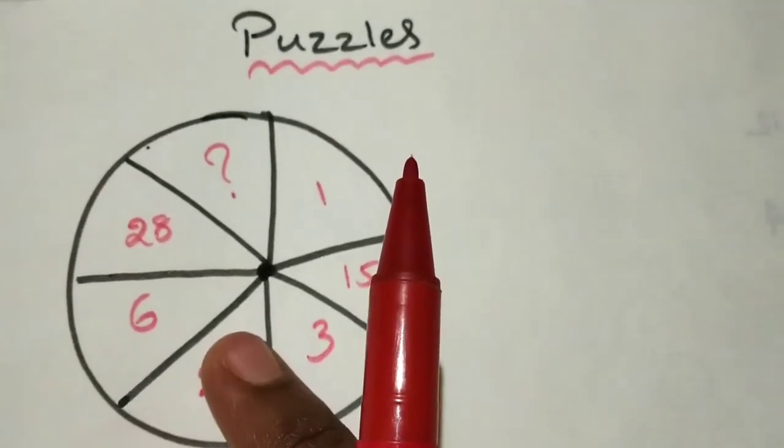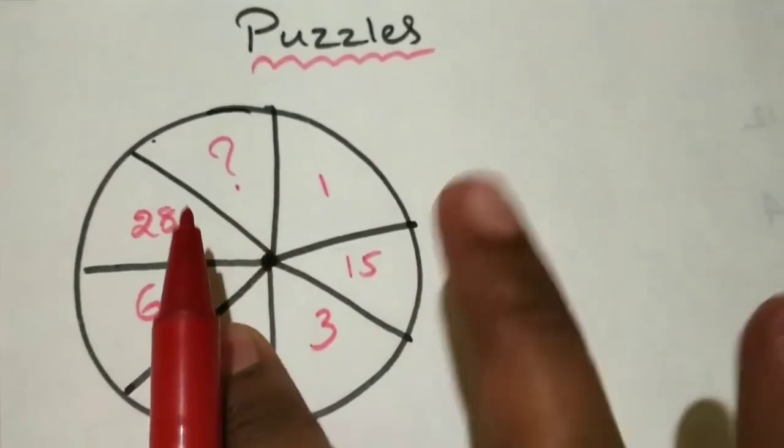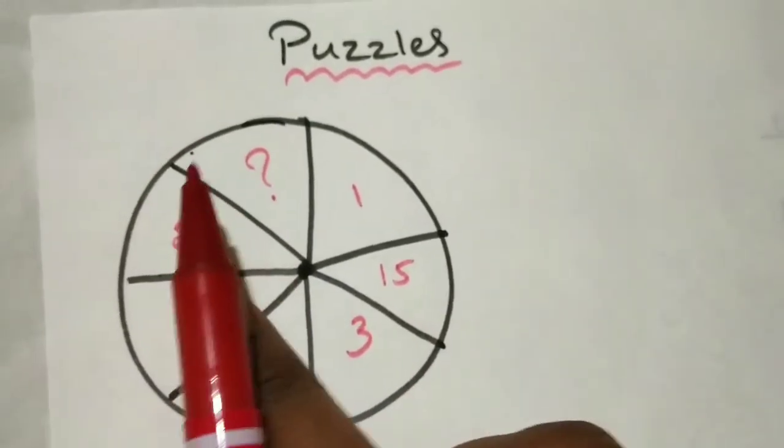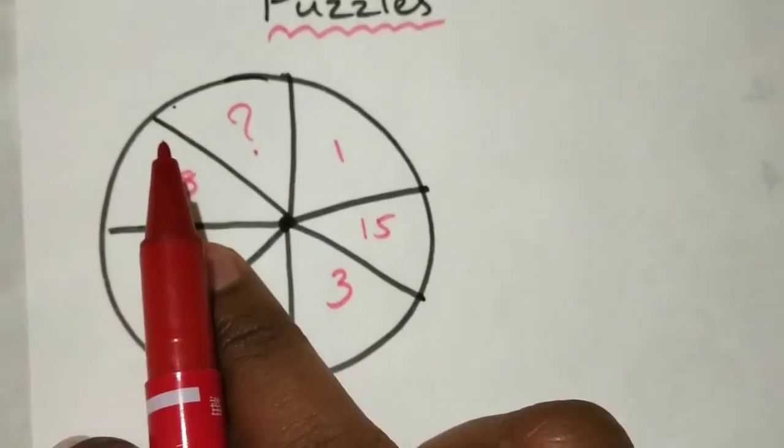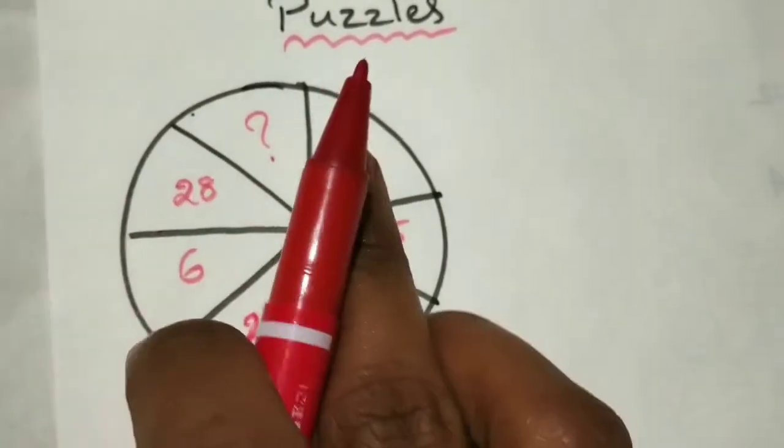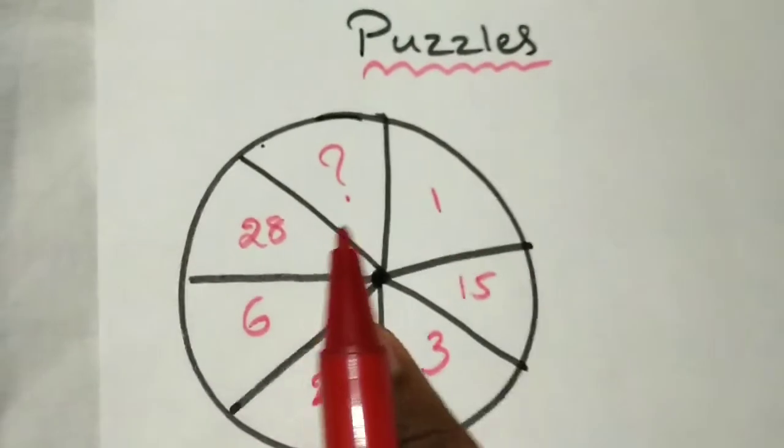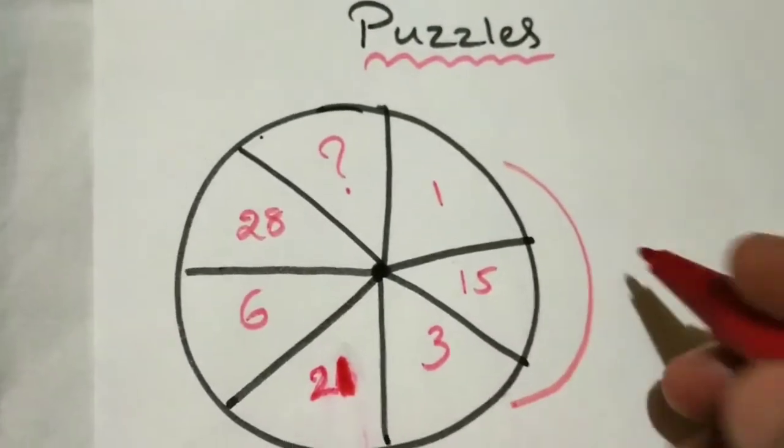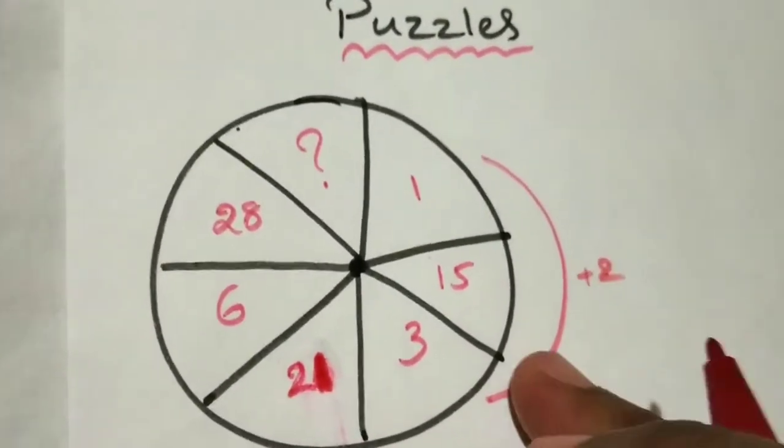Hi friends, today's puzzle answer is given like that: 1, 15, 3, 21, 6, and 28. How the logic will be applied? If you see them, 1, 3 - units are there. From 1, how we get 3? We have to add plus 2, then only we are getting 3. That is nothing but 1 plus 2 is equal to 3.